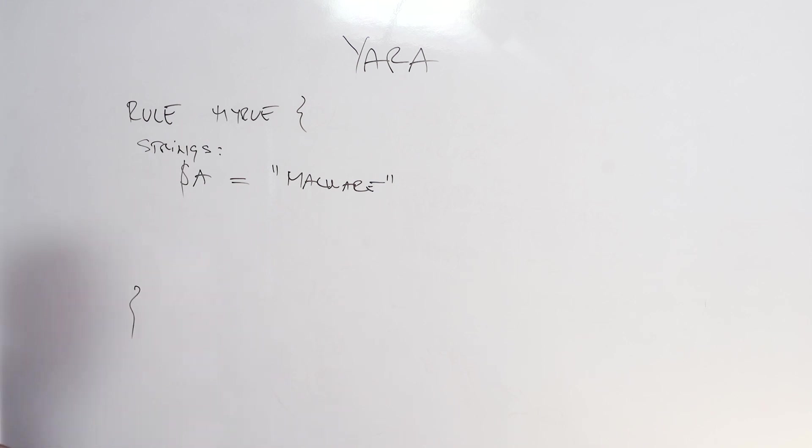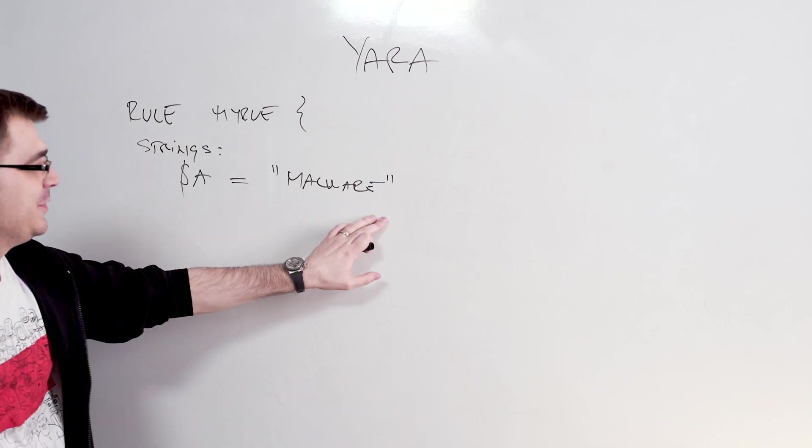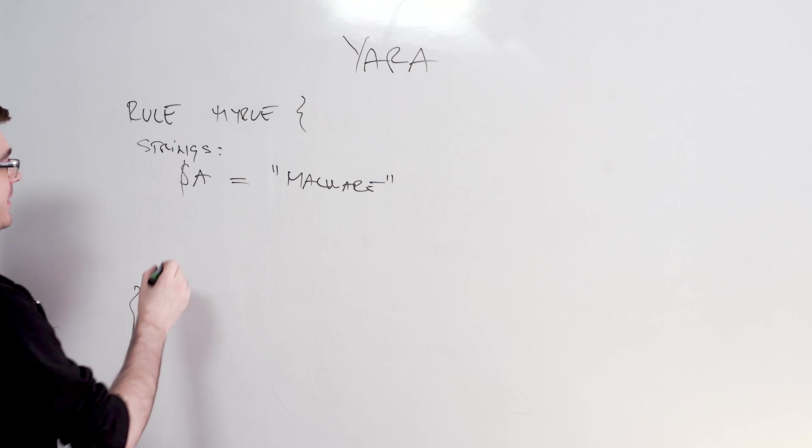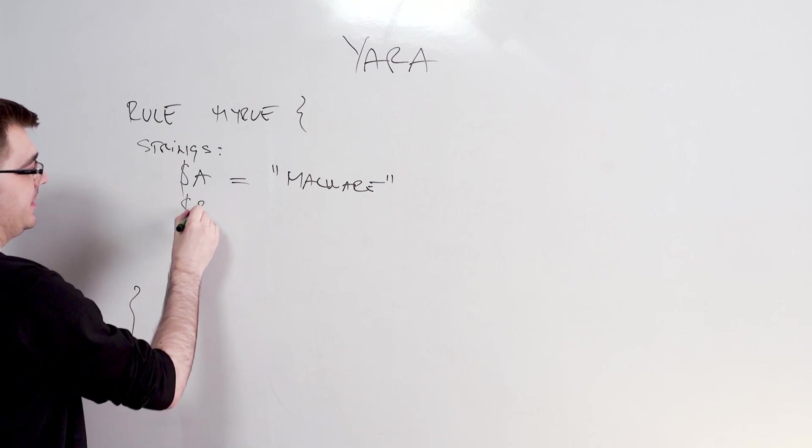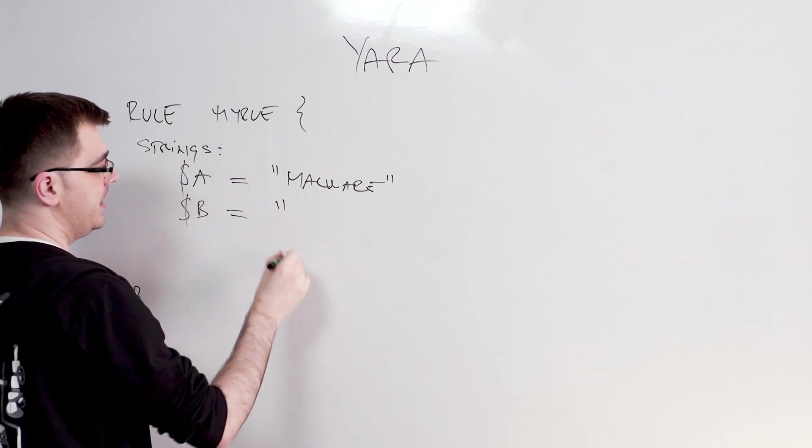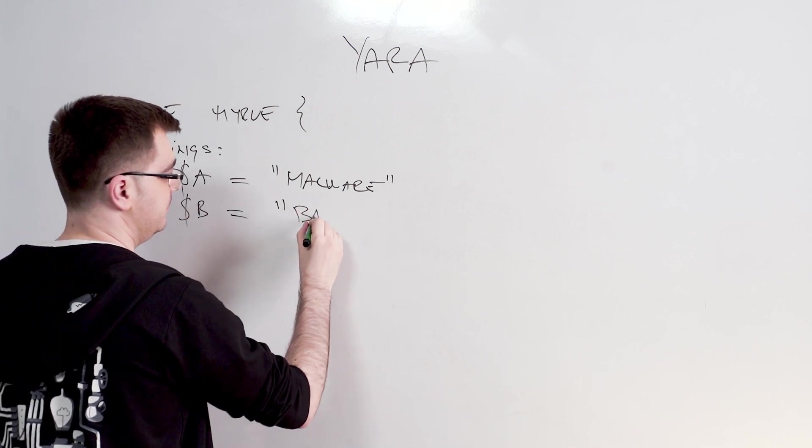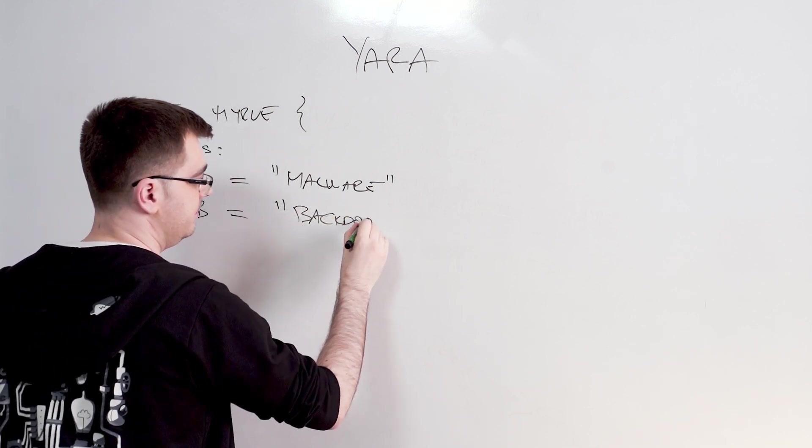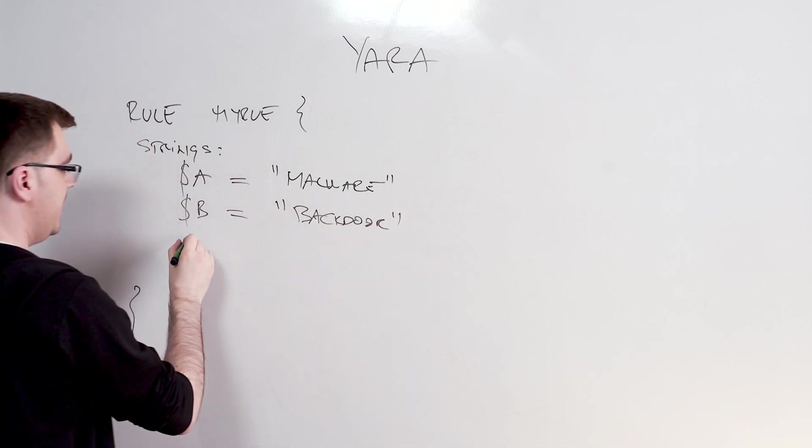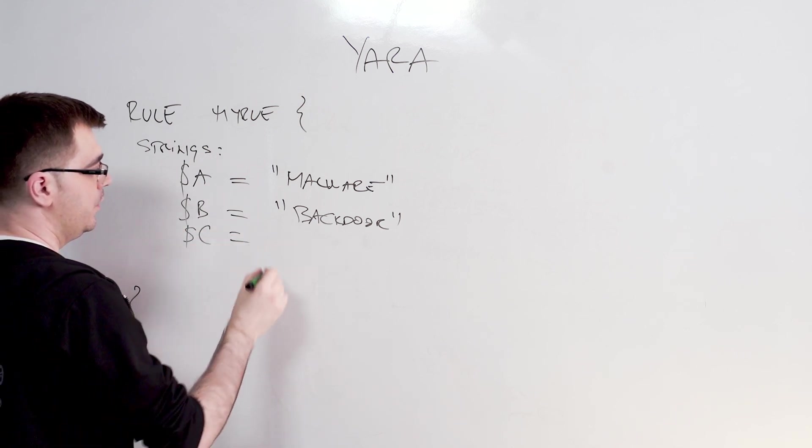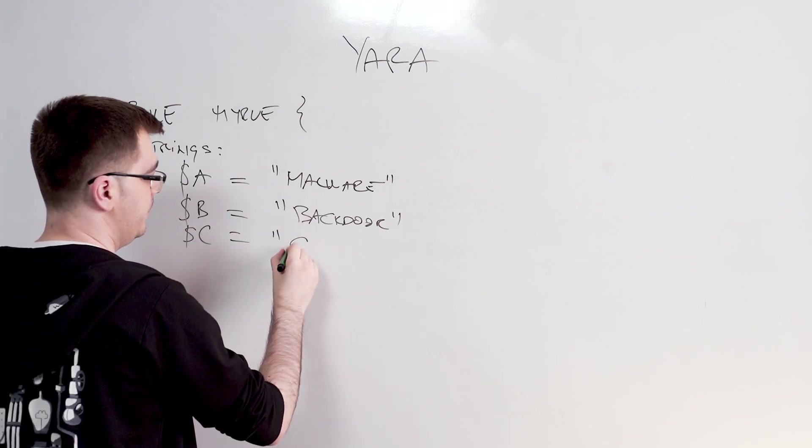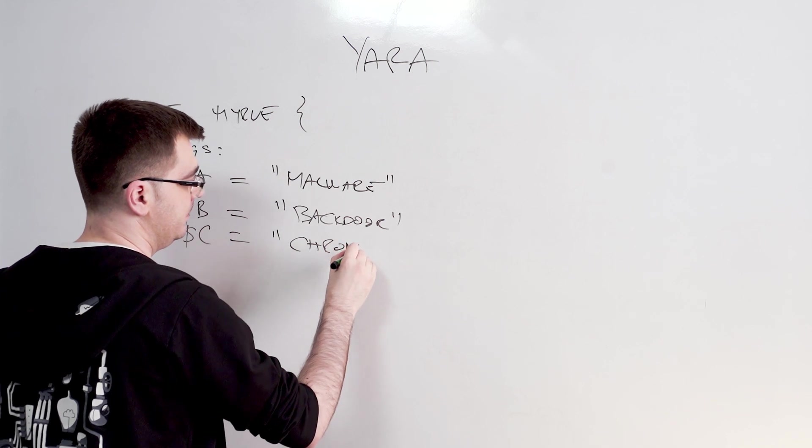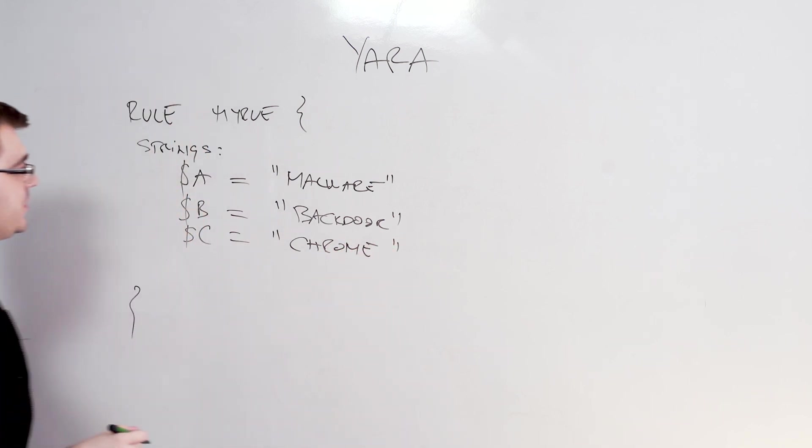Most malicious files will not tell us that they're malicious, but let's use that as an example. And let's say there's other strings in the file as well. Let's say this is backdoor. And then let's say there's another one which says Google Chrome. So now we have three conditions that this Yara rule has.